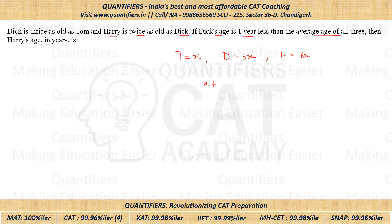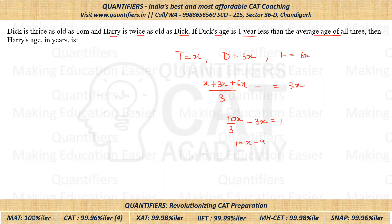So the average of all three would be X plus 3X plus 6X divided by three, and that minus one should be equal to Dick's age, which is 3X. So this becomes 10X by three minus 3X equals one, giving us 10X minus 9X by three equals one.